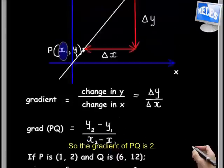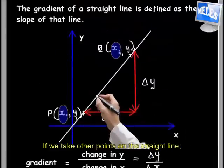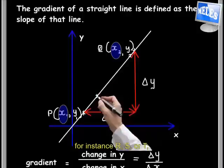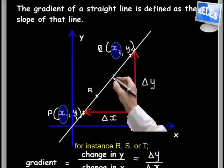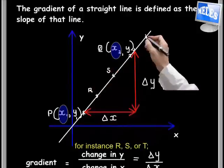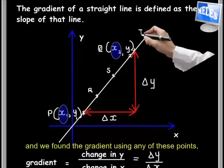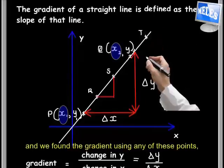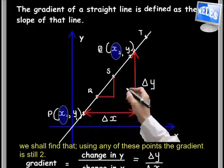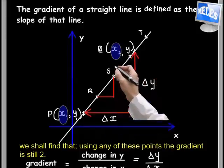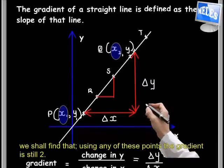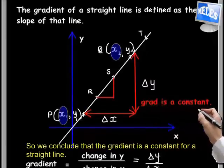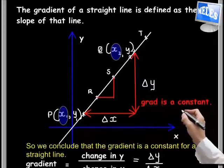So the gradient of PQ is 2. If we take other points on the straight line, for instance R, S, or T, and we find the gradient using any of these points, we shall find that using any of these points the gradient is still 2. So we conclude that the gradient is constant for a straight line.